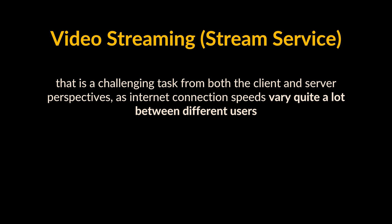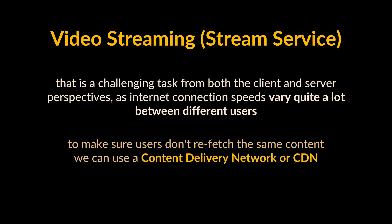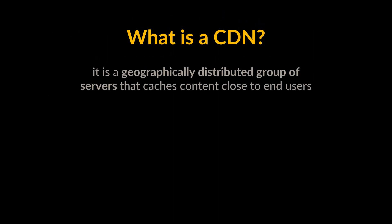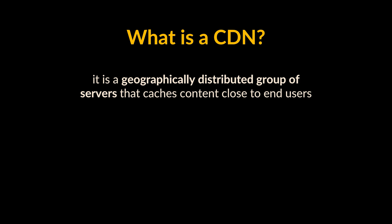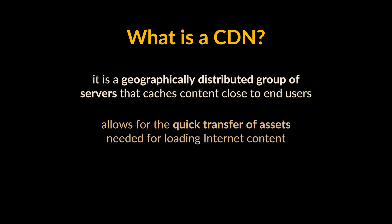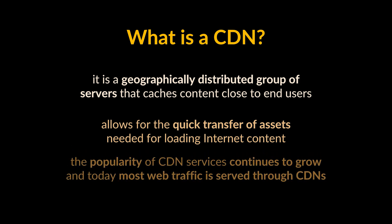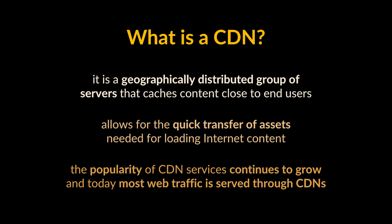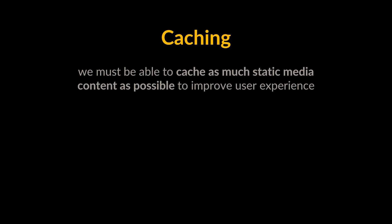Let's switch to video streaming, which is a challenging task from both client and server perspectives. Internet connection speeds vary quite a lot between users. To make sure users don't refetch the same content, we can use a content delivery network, or CDN. A CDN is a geographically distributed group of servers that caches content close to end users, allowing for quick transfer of assets including HTML pages, JavaScript files, stylesheets, images, and videos. Today, most web traffic is served through CDNs, including traffic from major sites like Facebook, Netflix, and Amazon.